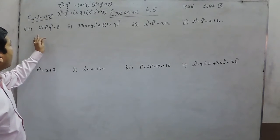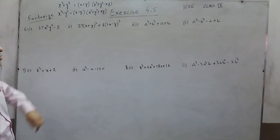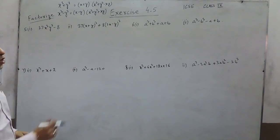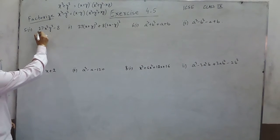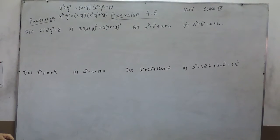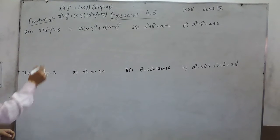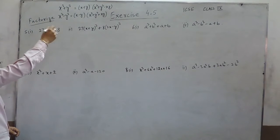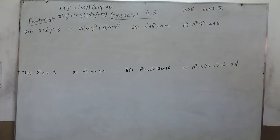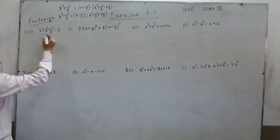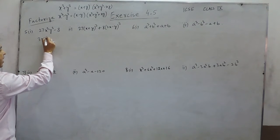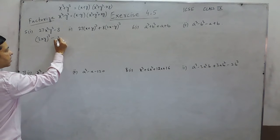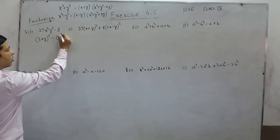Hello everyone. This is question number 5 of Exercise 4.5, ICSE Class 9. The question is 27x³y³ minus 8. As we already know both the identities x³+y³ and x³-y³, this expression is in the format of (3xy)³ minus (2)³.